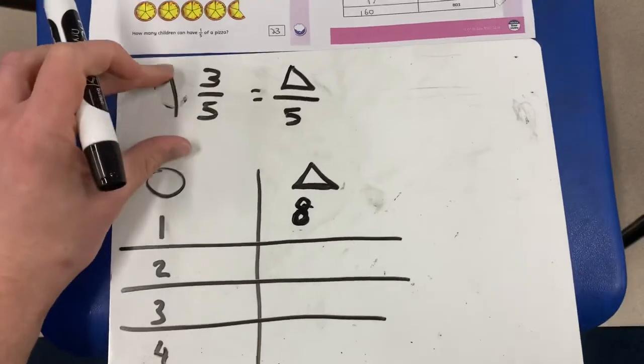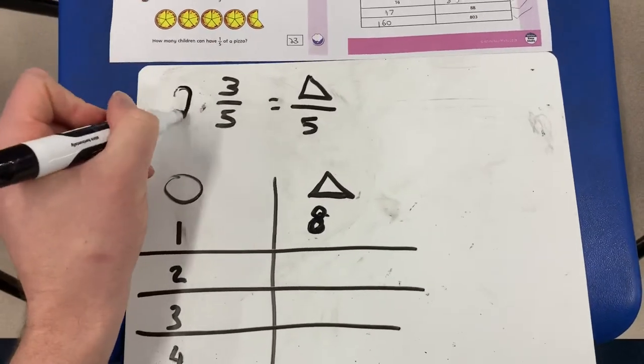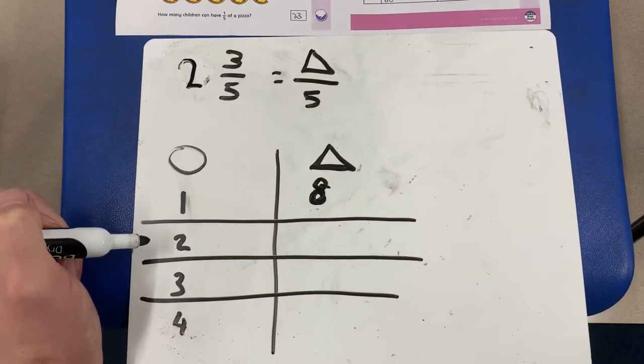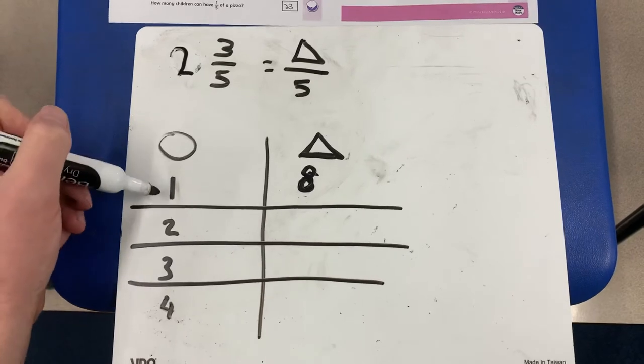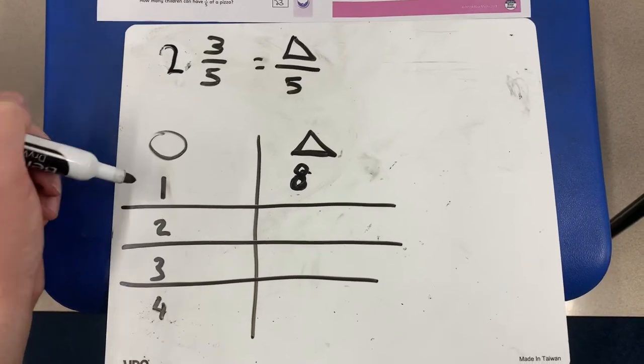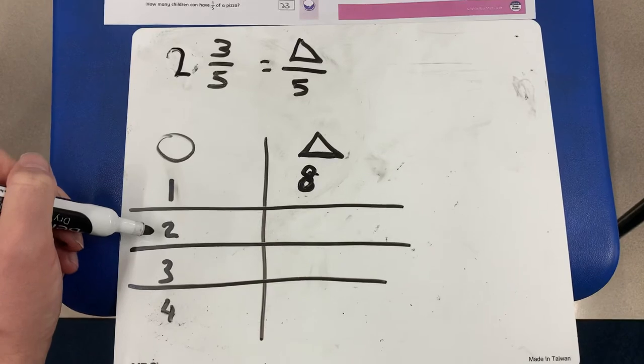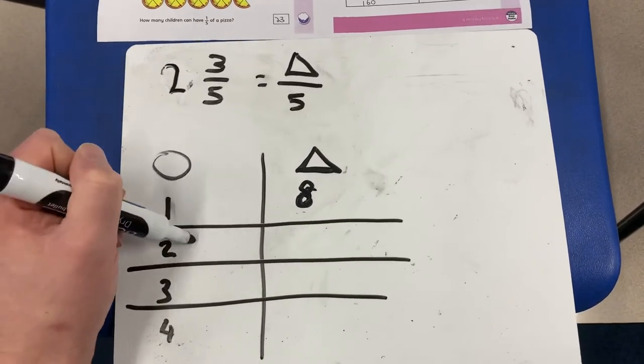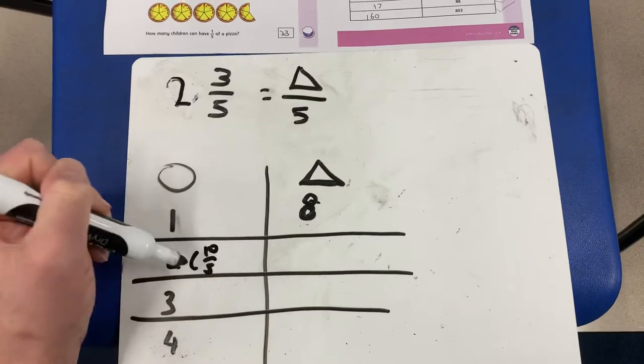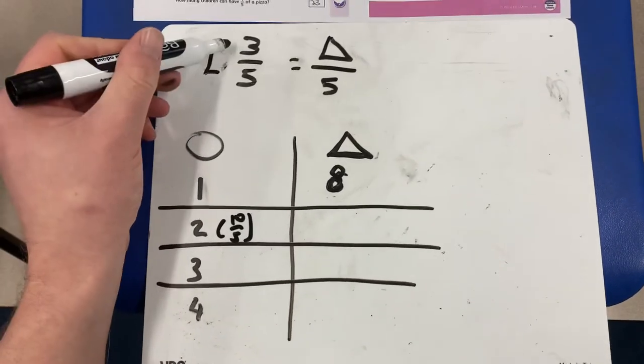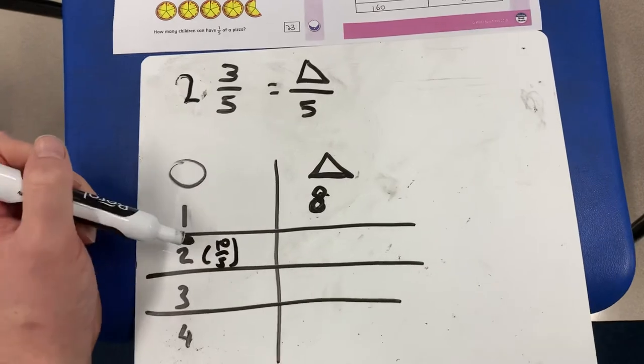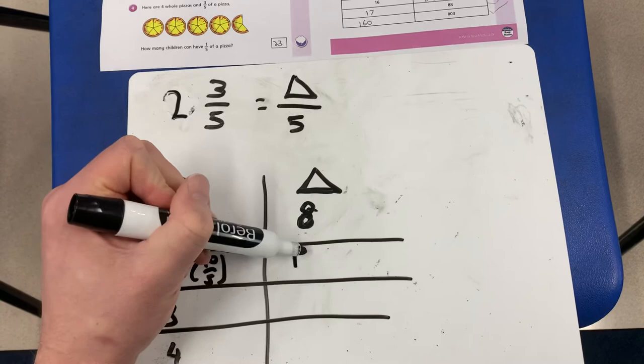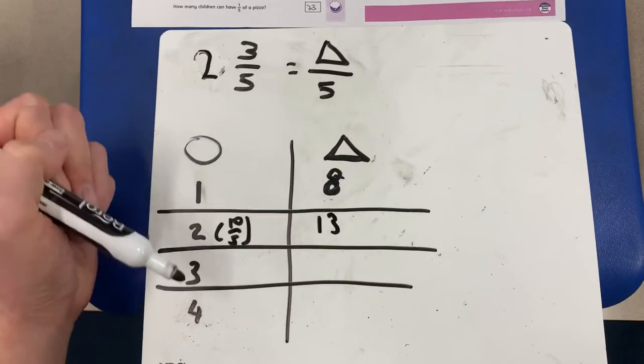Now if circle was two, how many fifths would we have there? Just have a quick think. Hopefully you understand that because we've got five-fifths in one, in two wholes we've got ten-fifths. So if we've got ten-fifths, then all we need to do is add the three-fifths. So triangle equals three-fifths add ten-fifths, which equals thirteen-fifths.